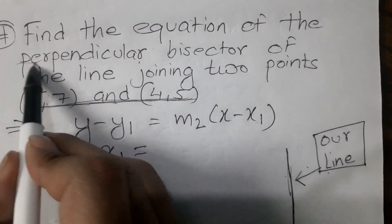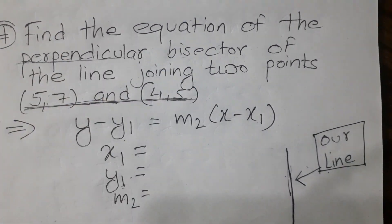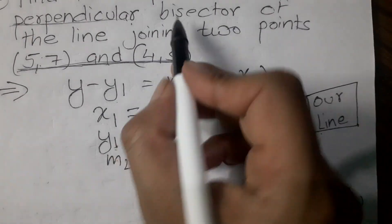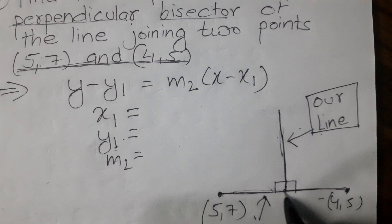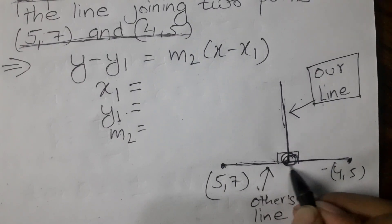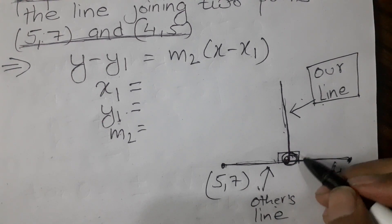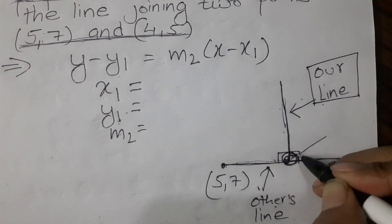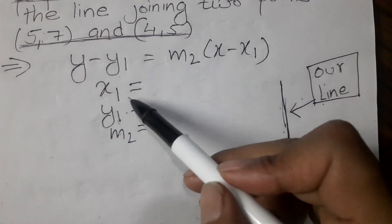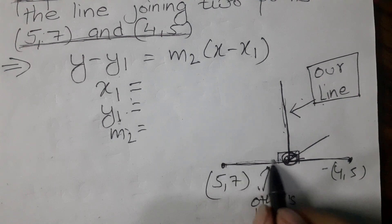The question uses two important terms: perpendicular bisector. Number one, our line is perpendicular to the helper line. Number two, bisector means there is a common point — a midpoint — between our line and the helper line. If we can find that common point, then x1 and y1 for our line become available.